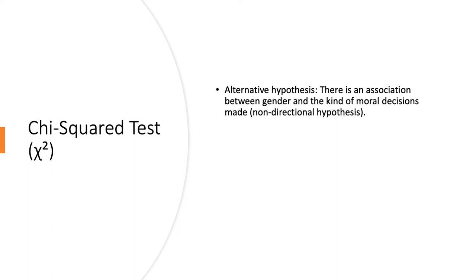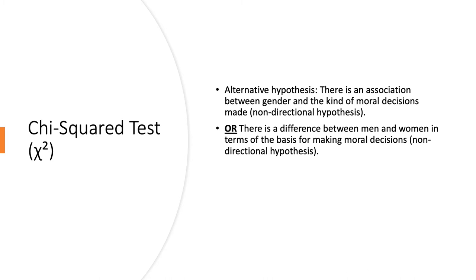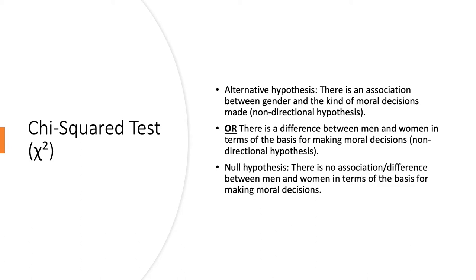Firstly, for the association hypothesis, you should have written there is an association or correlation or relationship between gender and the kind of moral decisions made. For the difference, fairly similar, there is a difference between men and women in terms of the basis for making moral decisions. And the null hypothesis would say there is no association or difference between men and women in terms of the basis for making moral decisions.